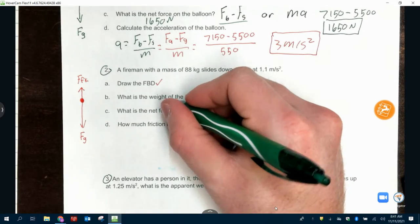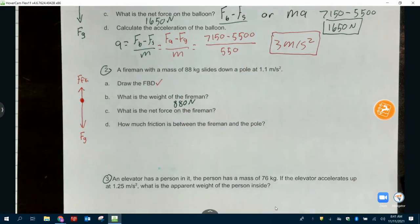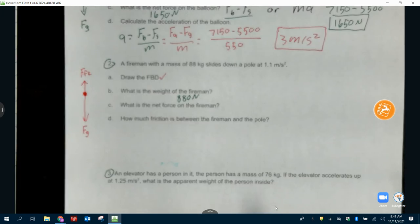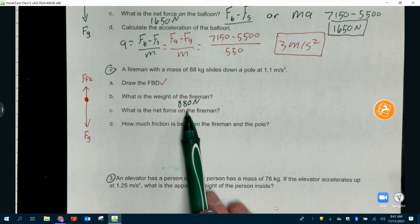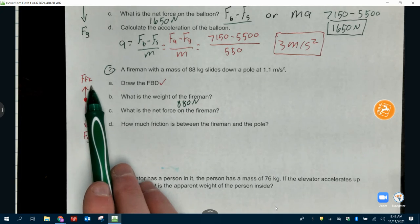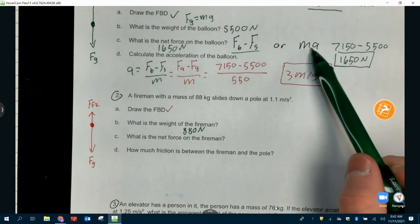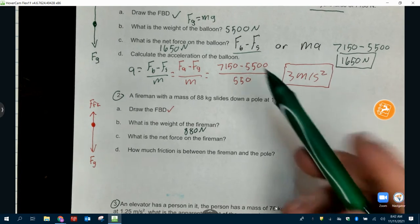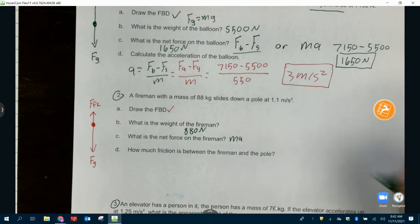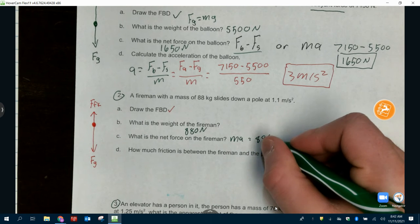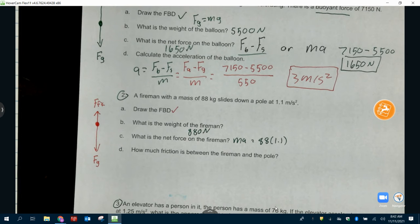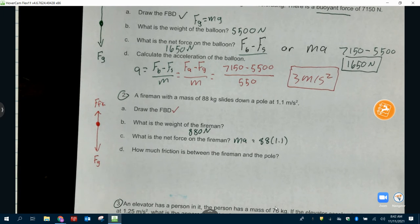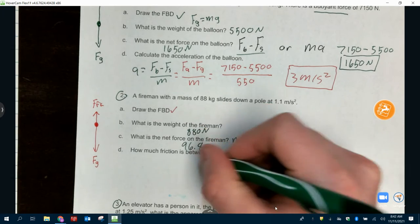To get weight. 88 times 10. So, 880 newton. Net force on the fireman. Do we have the big force? Do we have F_G? We just got it. It's 880. Do we have F_FK? No. So, we can't do this one. Do we have M? Yes. Do we have A? Yes. So, that's the one we're going to use. We're going to use M-A here. So, 88 times 1.1. 96.8 newton.